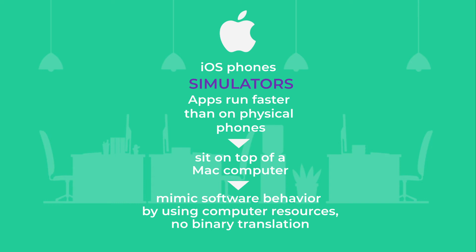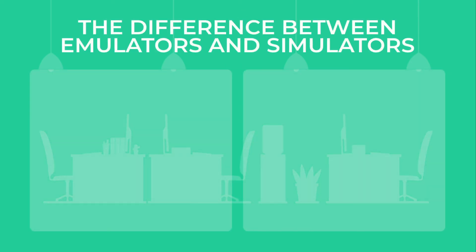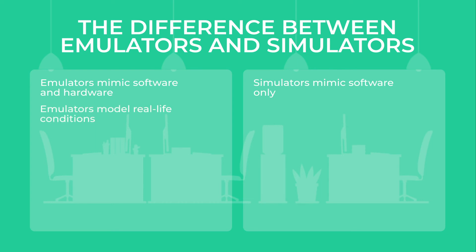That can be a bit overwhelming — don't worry, you will find an article with more information in the description. Now it is time to move to the differences between emulators and simulators. On the screen: emulators mimic software and hardware, simulators mimic software only. Emulators model real-life conditions; simulators don't follow the rules of the real environment.